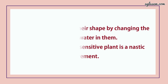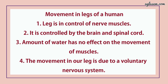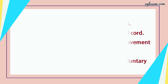Now let's talk about movement in the legs of a human. First point: the leg is in control of nerve muscles. Second: it is controlled by the brain and spinal cord. Third: the amount of water has no effect on the movement of muscles. And the fourth point: the movement in our leg is due to the voluntary nervous system.